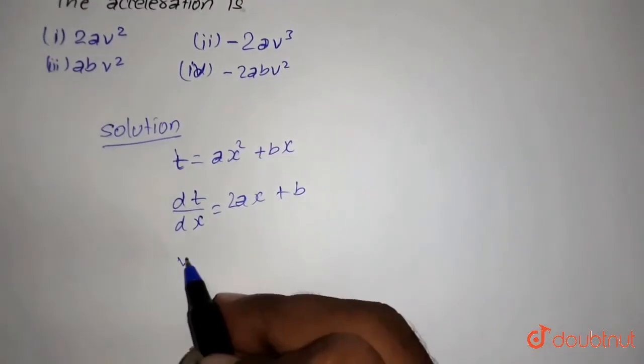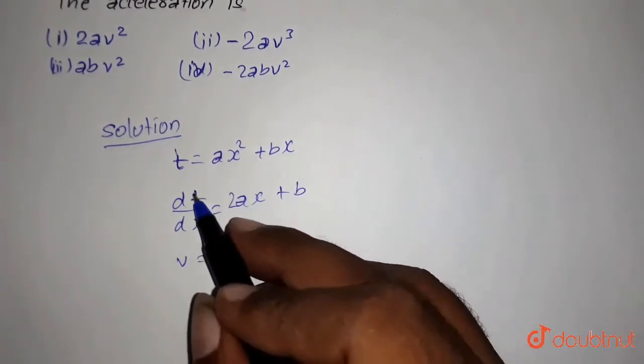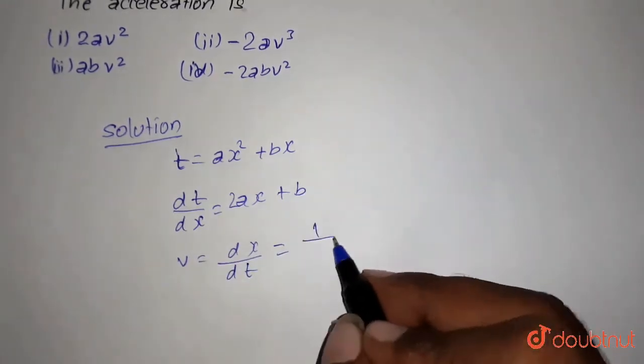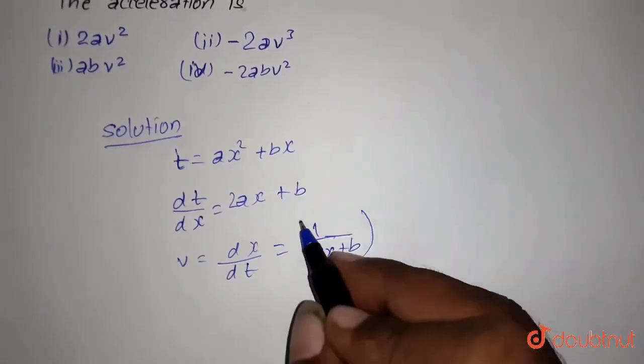And as we know, velocity equals dx by dt. So this will be equal to the reciprocal of this part, that is 1 by 2ax plus b. This is our velocity.